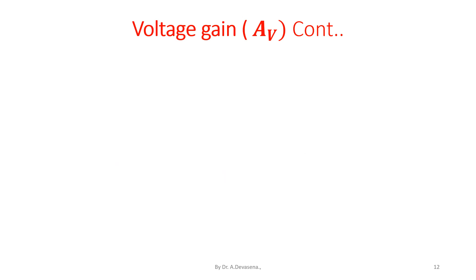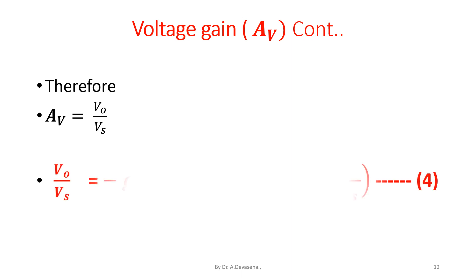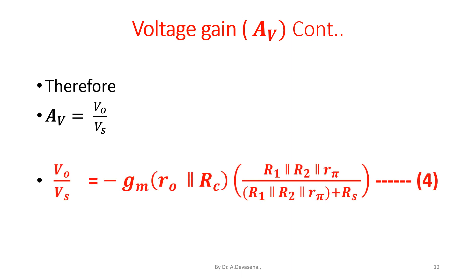Therefore, the voltage gain A suffix V is equal to the ratio of the output voltage V0 to V suffix S, which gives: A suffix V equals minus Gm into R0 parallel Rc into R1 parallel R2 parallel R pi, divided by R1 parallel R2 parallel R pi plus R suffix S.